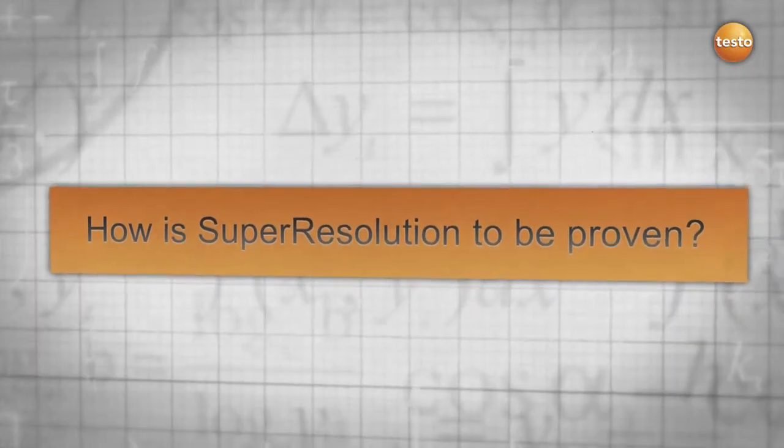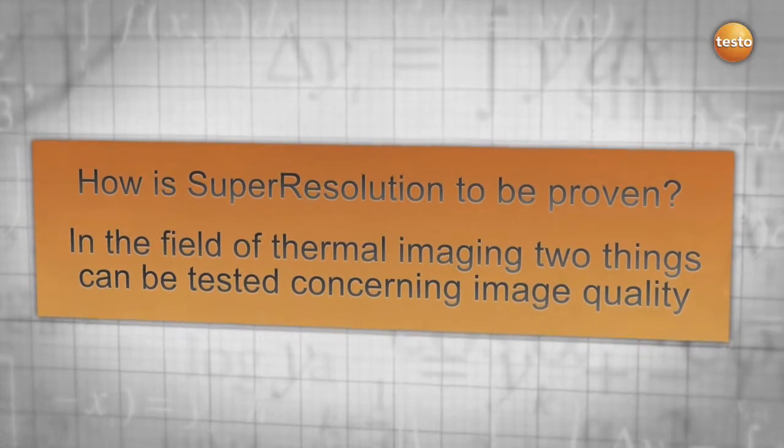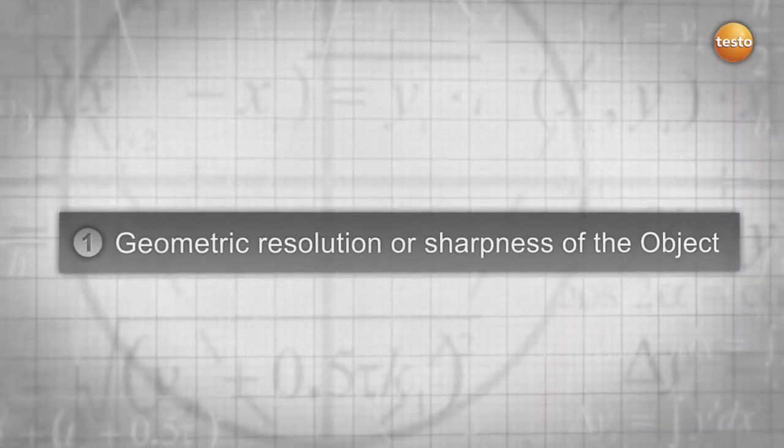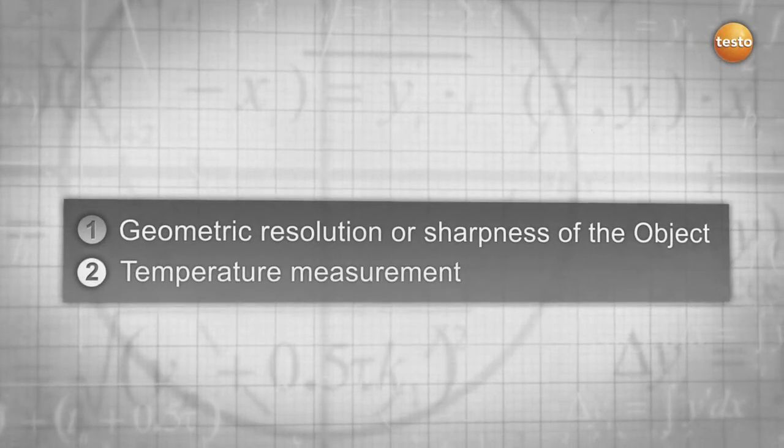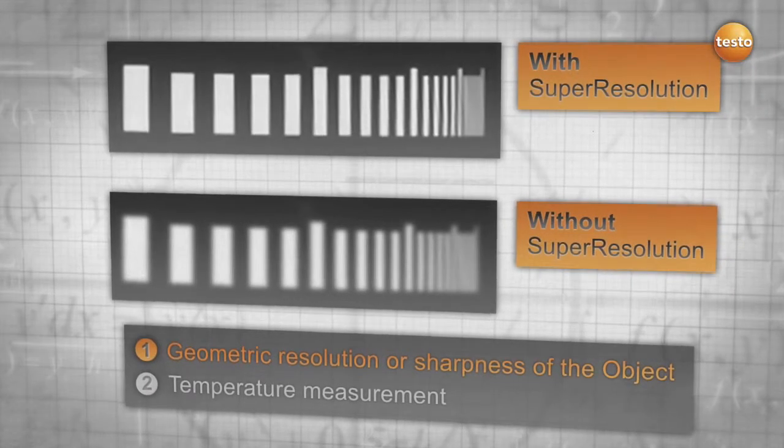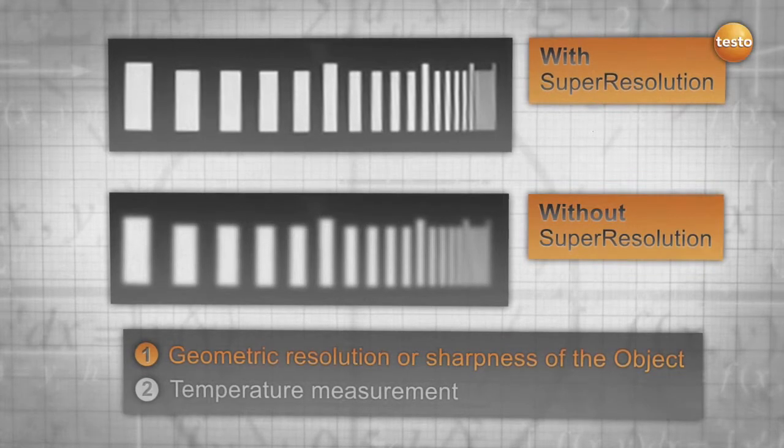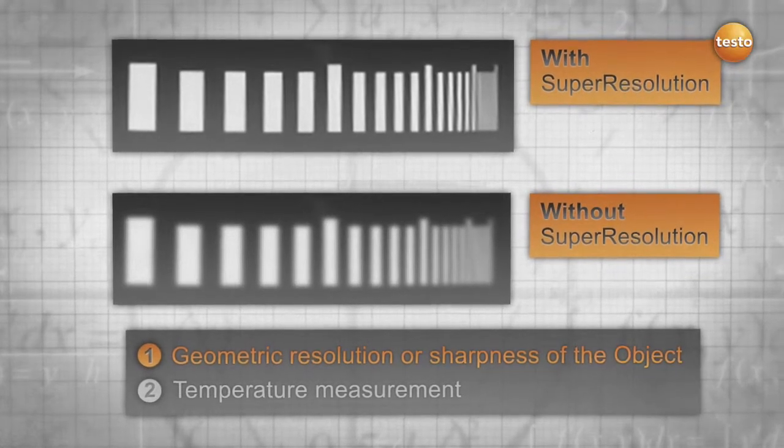But how can super-resolution be proven? In the field of thermal imaging, there are two factors that play an important role in the quality. These are geometric resolution, or sharpness of the object, and precision of the temperature measurement. The difference is clearly seen in this test. A gobo with vertical slots of different widths and distances is placed in front of a black body that has a certain temperature.